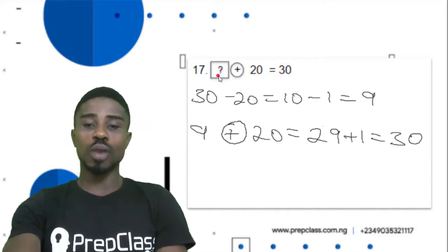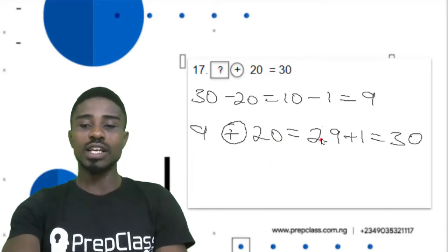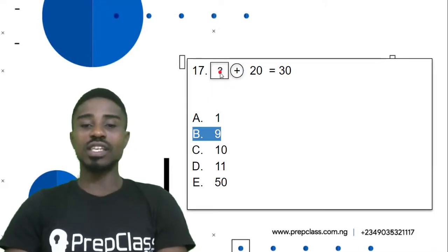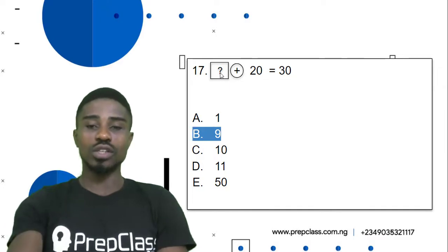And to prove this to be true, we are going to say 9 plus 20 will give us 29. 29 plus 1 will give us 30 which is this. So 9 is our correct answer here. Let's check it out. Question 17, option B, 9 is our correct answer. Let's look at the next question.